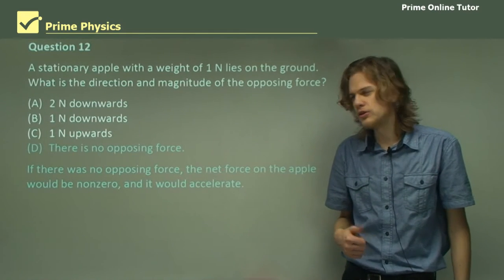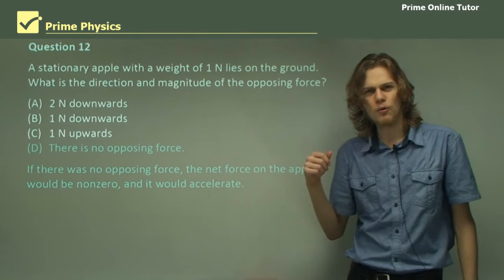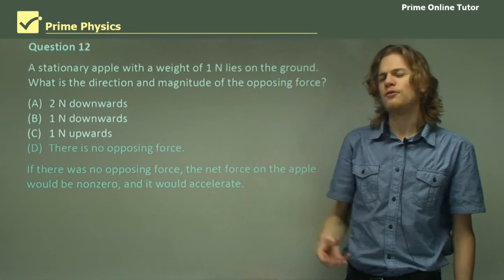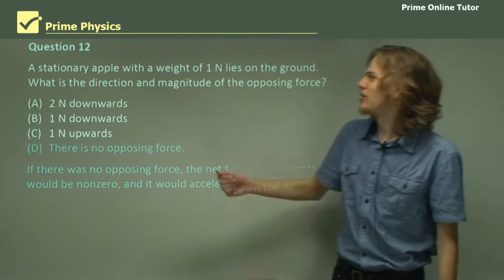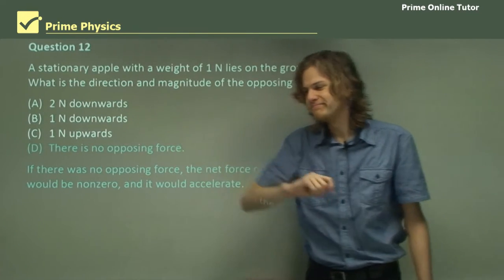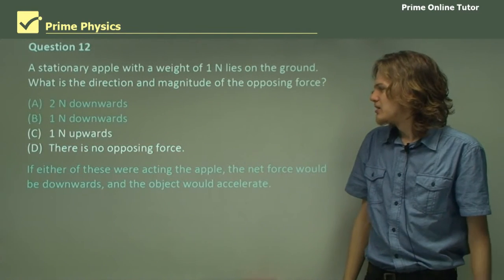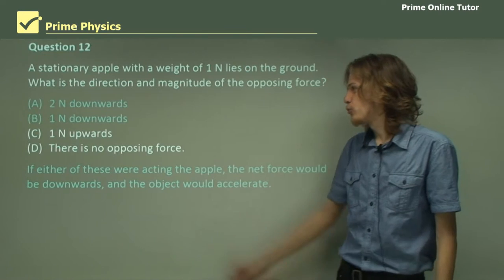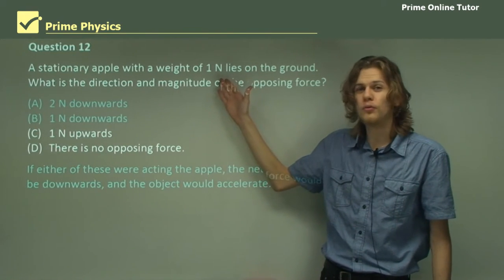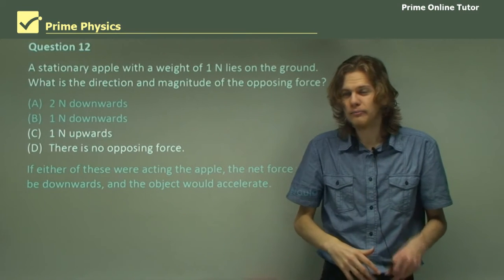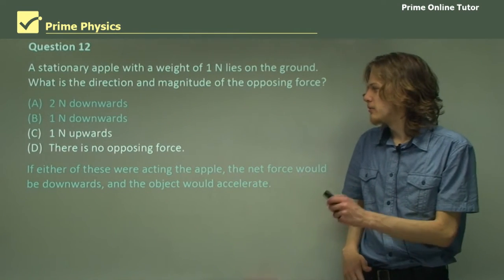If there was no opposing force, then the total force would be one Newton downward, and the object would sink through the ground. This is obviously not the case because the apple is stationary. Similarly, if the opposing force was one Newton or two Newtons downward, then this would add to the one Newton of the weight and push it down to the ground.